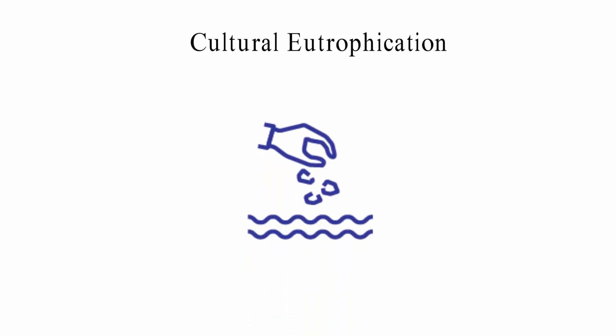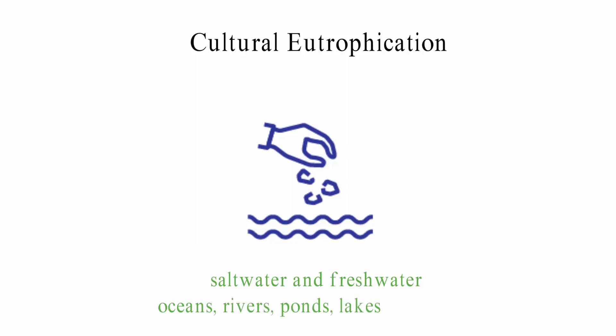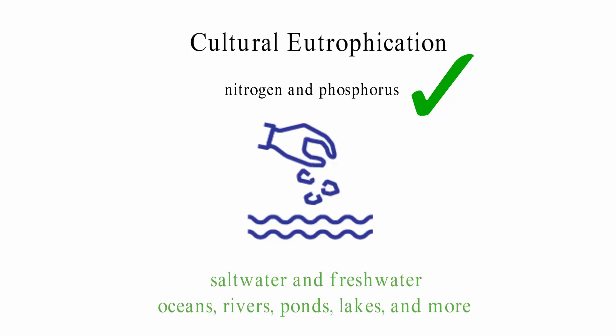People can pollute water intentionally or unintentionally by putting harmful substances into water bodies. Cultural eutrophication can happen in both salt water and fresh water — in oceans, rivers, ponds, lakes, and more. This type of eutrophication happens more quickly than the other kind. The amount of nitrogen and phosphorus in the water may also change the length of time it takes to harm water supplies.